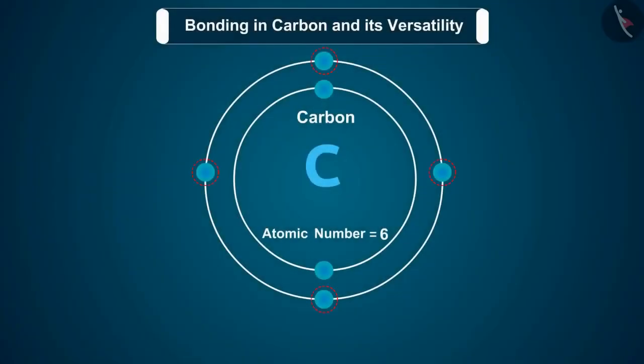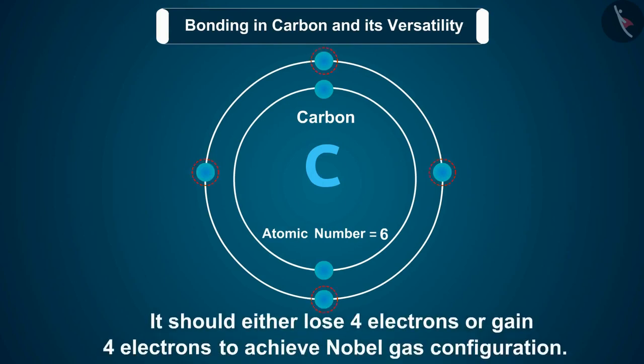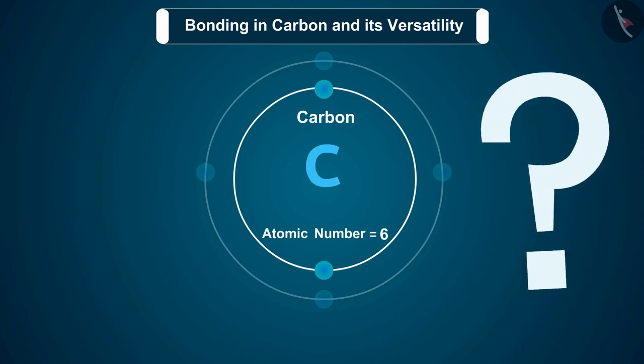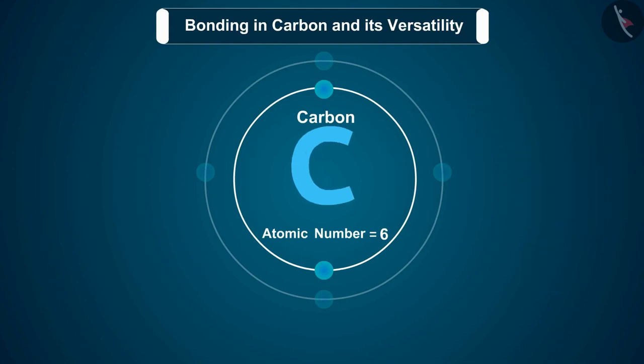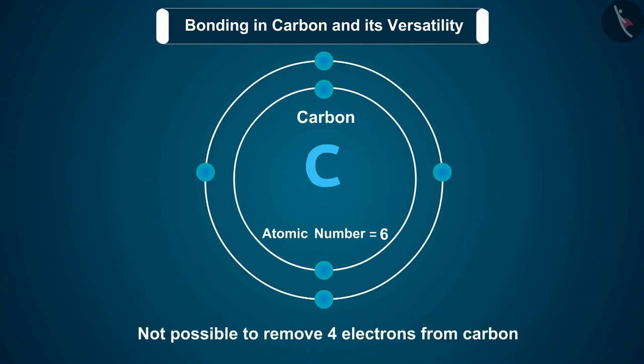Carbon has 4 electrons in its outermost shell. So it should either lose 4 electrons or gain 4 electrons to achieve noble gas configuration. But is it possible? As carbon is a small atom, outermost electrons are held strongly by the nucleus of the atom. So it is not possible to remove 4 electrons from carbon. Also, it is not possible to gain these many electrons due to energy considerations.